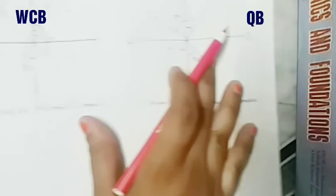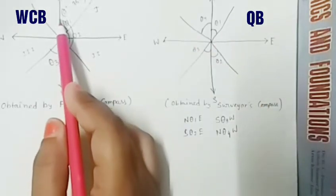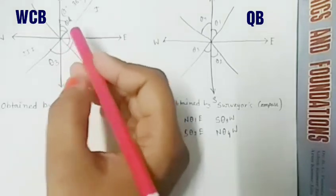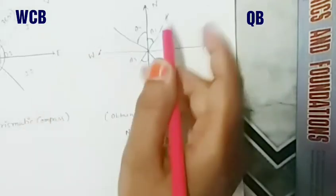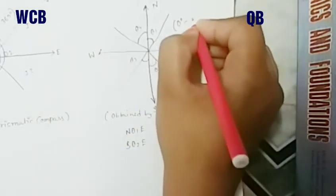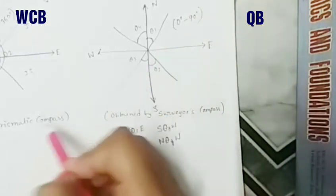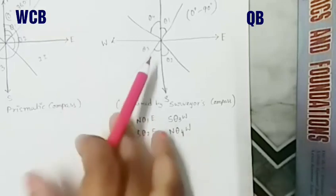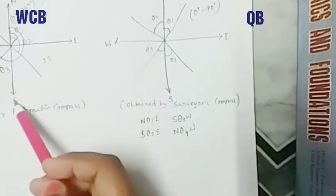In the Quadrantal Bearing system, the bearings are mentioned with their respective coordinate positions. In the Whole Circle Bearing system, the value is taken clockwise from north and can be any value between zero to 360 degrees. But in the Quadrantal system, the value should be between zero to 90 degrees with their respective coordinate positions.